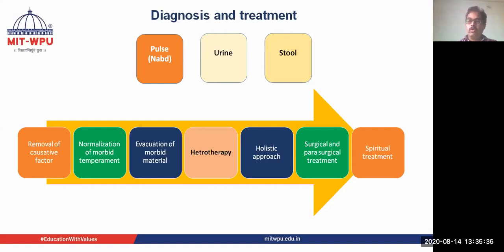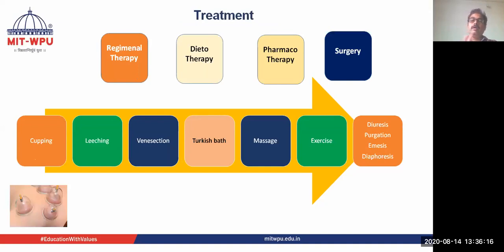Treatment in Unani is based on the removal of causative factors. It involves normalization of morbid temperament — where the quality and quantity of humor is unchanged but the temperament has shifted — as well as evacuation of morbid material, where the quality or quantity of humor is altered. Heterotherapy involves administering a drug of a different temperament to treat the patient. A holistic approach considers the whole body, and surgical, parasurgical, and spiritual treatments may also be recommended. Treatment modalities include regimenal therapy, dietotherapy, pharmacotherapy, and surgery.